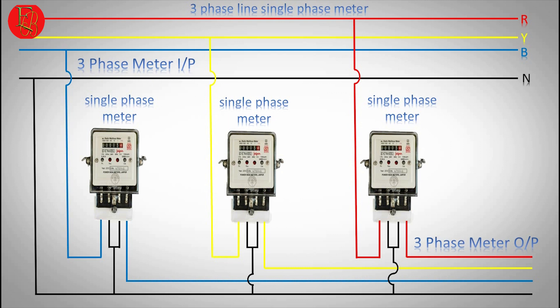Three phase meter output. First phase red, second phase yellow, third phase blue, neutral line.